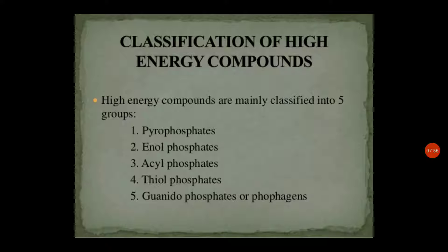Next we will look into the classification of high energy compounds. The high energy compounds are classified into mainly five groups: pyrophosphates, enol phosphates, acyl phosphates, thiol phosphates, and guanidino phosphates or phosphagens.